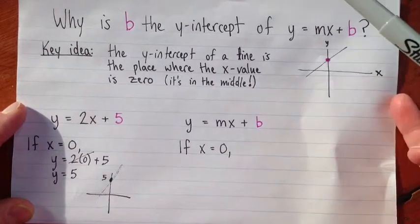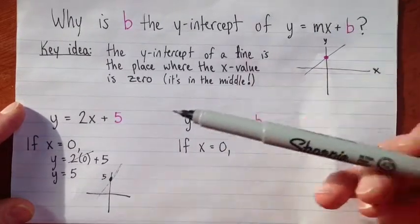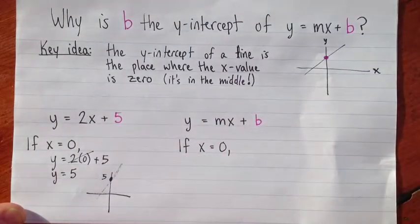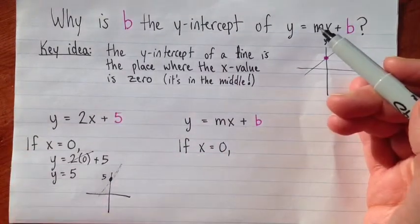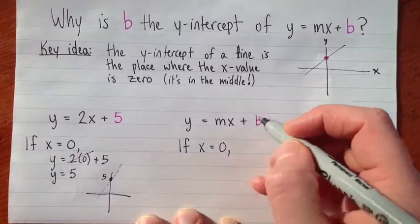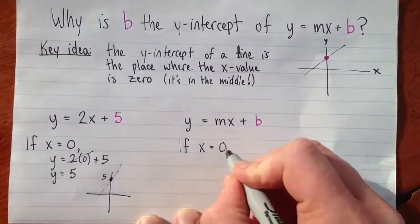So this is the whole thing that happens: when we substitute x equals zero, this part of the equation disappears because it's equal to zero. So the same thing happens if we just look at y equals mx plus b. If we want to find the y-intercept, we substitute x equals zero.